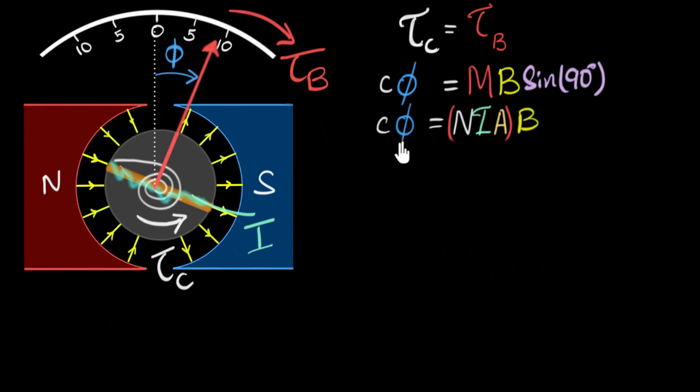And as a result, we see that the twist produced is proportional to the current, giving us a linear galvanometer, exactly what we want. And if you need a refresher on this, feel free to go back to our previous video on moving coil galvanometers. We have talked about this in great detail.